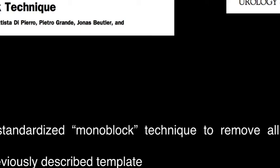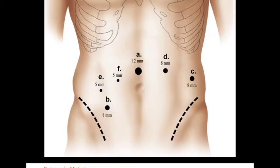This video describes a standardized and simplified method for monoblock dissection of all lymphatics in the previously described template. The initial 12 mm camera port is placed supraumblically. All other ports are placed on the direct site, as described earlier in our technical study.